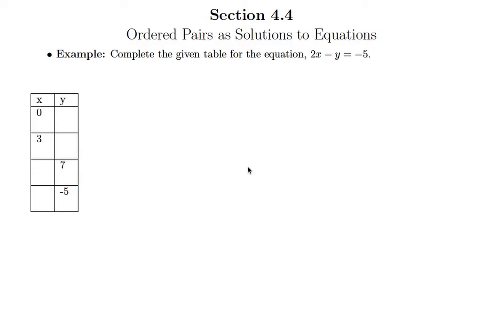This problem is basically asking us to do the same exact thing as we were asked to do in the last video, in that in the last video we were completing ordered pairs so that the ordered pairs would be solutions to the equation they gave us. So here we're going to complete a table so that each row in the table would represent an ordered pair that's a solution to that equation.